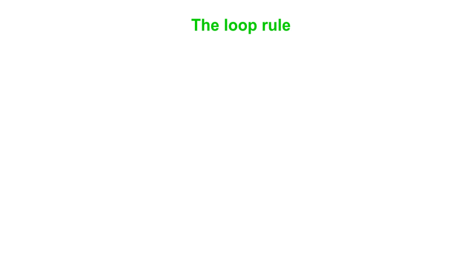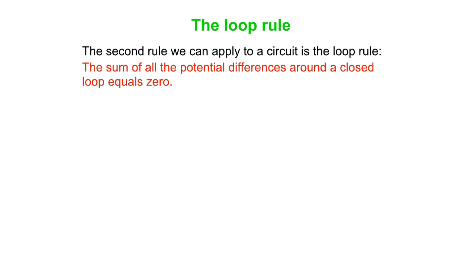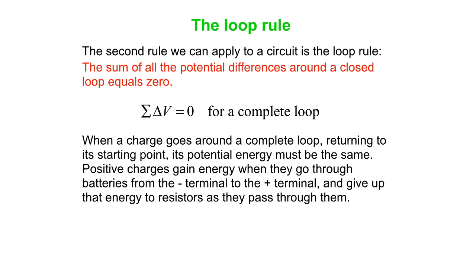So the second rule we're going to look at is what we call the loop rule, and what that is, it says the sum of all the potential differences around a closed loop equals zero. If we express that in the form of an equation, we get this. The sum of all the delta V's equals zero for a complete loop. So, when a charge goes around a complete loop, its potential energy has to be the same as when it started that loop, when it gets back to the same point.